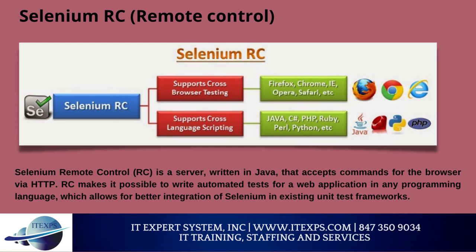Selenium RC — Remote Control — is a server written in Java that accepts commands for the browser via HTTP. RC makes it possible to write automated tests for a web application in any programming language, allowing for better integration of Selenium in existing unit test frameworks. The Selenium project currently provides client drivers for PHP, Python, Ruby, .NET, Perl, and Java. The Java driver can also be used with JavaScript via the Rhino engine. An instance of the Selenium RC server is needed to launch HTML test cases, with different ports required for each parallel run. However, for Java and PHP, only one Selenium RC instance needs to be running continuously.